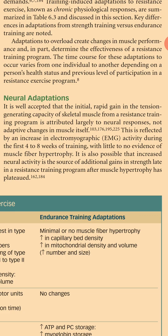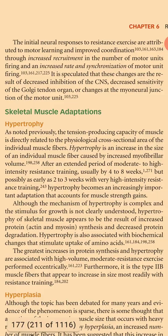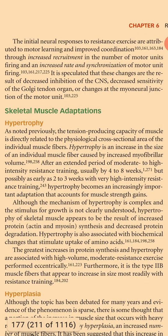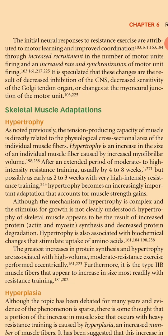This is reflected by an increase in electromyographic activity during the first 4-8 weeks of training with little to no evidence of muscle fiber hypertrophy. It is also possible that increased neural activity is the source of additional gains in strength late in a resistance training program after muscle hypertrophy has plateaued. The initial neural responses to resistance exercise are attributed to motor learning and improved coordination through increased recruitment in the number of motor units firing and an increased rate and synchronization of motor unit firing.